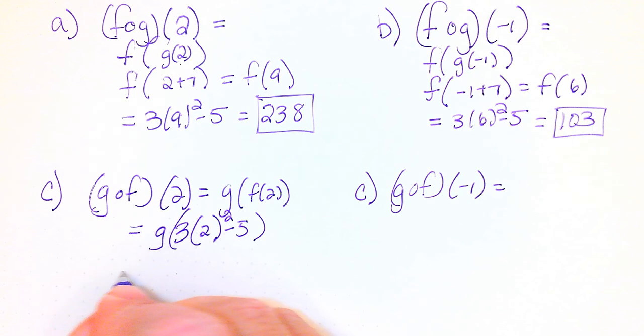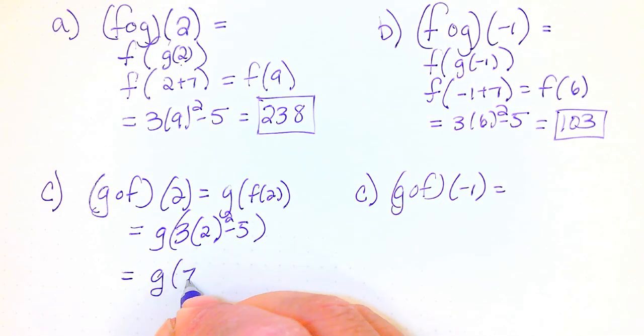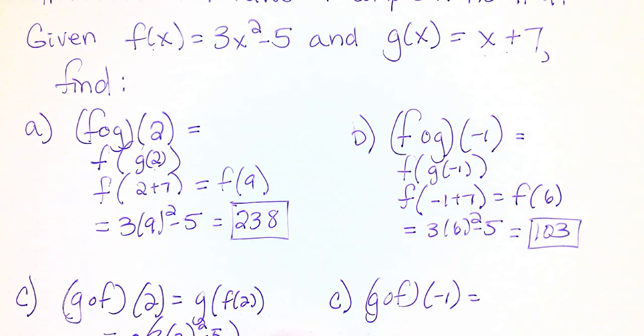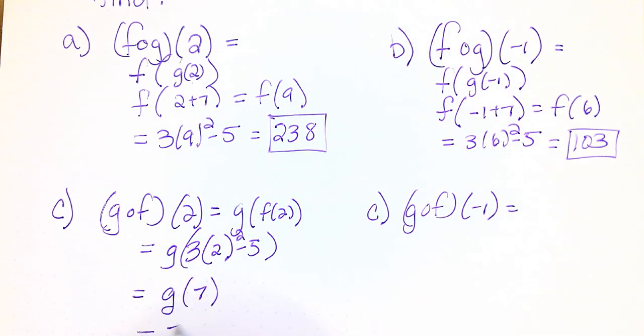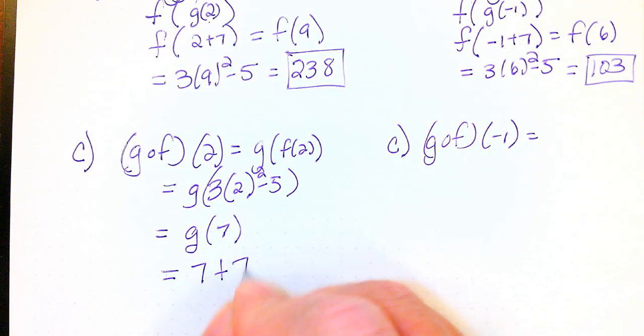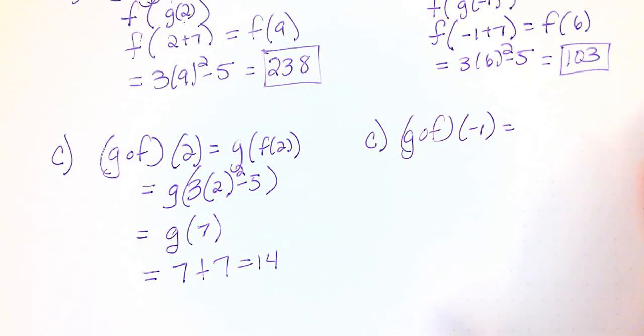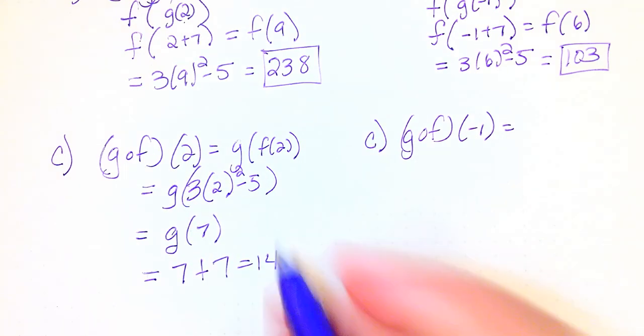So I need to figure out what this is first. So I've got g of 3 times 2 squared minus 5, which is 7. And then I'm going to take that 7 and substitute it into this x plus 7. So this is going to be 7 plus 7, which is 14. So notice that our f of g of 2 was not the same thing as g of f of 2. So that was my answer there.